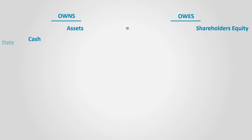The business owns cash of $100,000, and it will appear under the assets category. On the other hand, common shares will appear on shareholders' equity with $100,000. As you noticed, both sides are equal. This equation is called the accounting equation or the balance sheet equation.